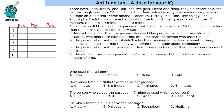Clue one: Jatin, who did the economics passage, took one minute longer than Nidhi, but one minute less than the person who did the history passage. So these three are in order: Nidhi, then Jatin doing economics, then the person doing the history passage. These can be positions one-two-three, two-three-four, or three-four-five — we do not know yet.